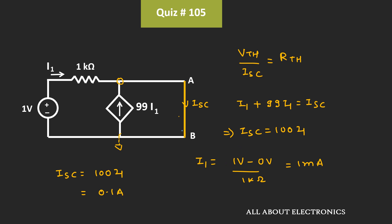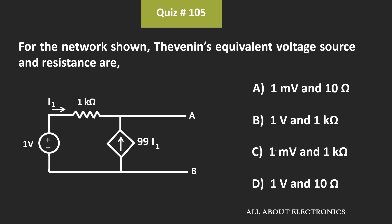That means the Thevenin's equivalent voltage is equal to 1V, while this short-circuit current is equal to 0.1A. That means the Thevenin's equivalent resistance is equal to 1V divided by 0.1A, that is equal to 10Ω. So for the given circuit, the Thevenin's equivalent voltage is equal to 1V, while the Thevenin's equivalent resistance is equal to 10Ω. And hence, D is the correct answer.